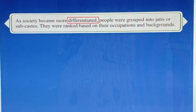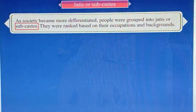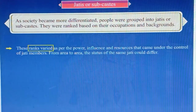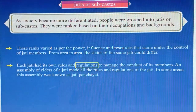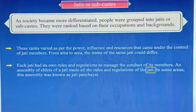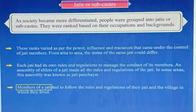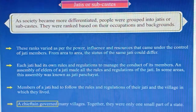As society became more differentiated, people were grouped into jatis or sub-castes. They were ranked based on their occupations and backgrounds. These ranks varied as per the power, influence and resources that came under the control of jati members, and the status of the same jati could differ from area to area. Each jati had its own rules and regulations to manage the conduct of its members. An assembly of elders of a jati made all the rules, known in some areas as the jati panchayat. Members of a jati had to follow the rules of their jati and the village in which they lived. A chieftain governed many villages, and together they were only one small part of a state.